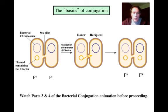What you need to do now is watch parts three and four of the bacterial conjugation animation, then come back and we'll look at a very special case of conjugation that involves incorporating the fertility factor directly into the chromosome. So pause here and watch parts three and four, then come on back.